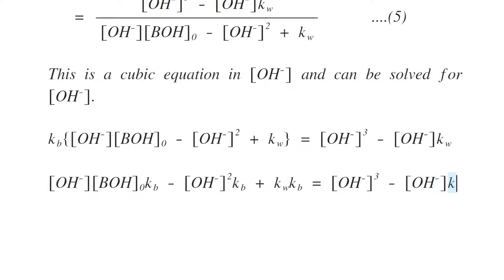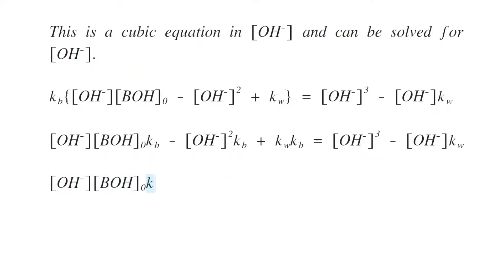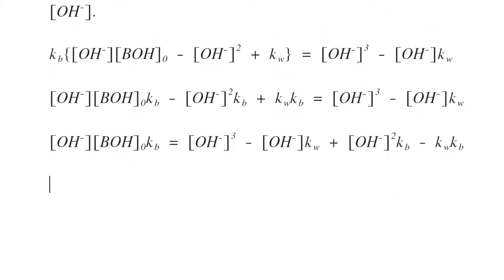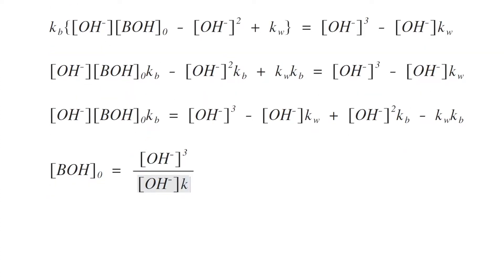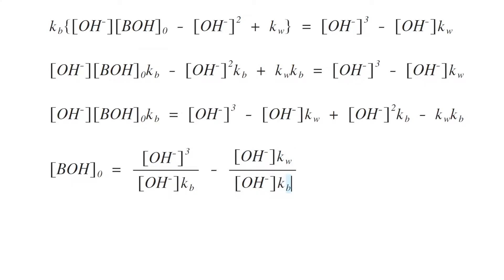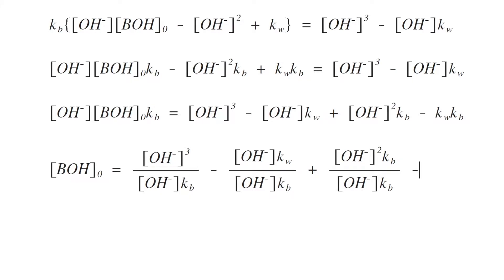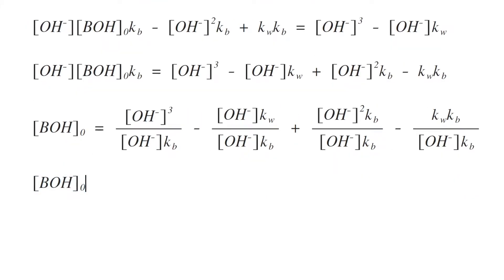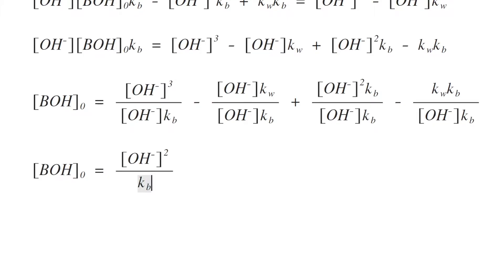Moving all terms to the right-hand side and cancelling common factors, we get [BOH]₀ equals [OH⁻]²/Kb minus Kw/Kb plus [OH⁻]·(1 minus Kw/[OH⁻]).